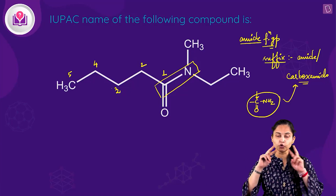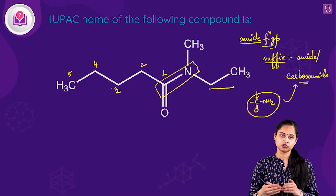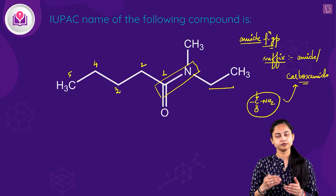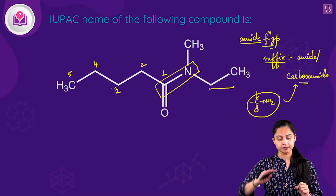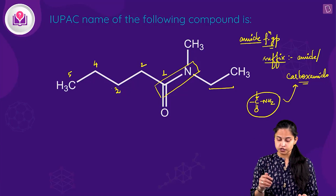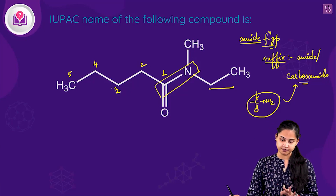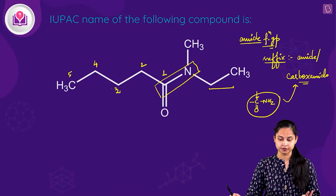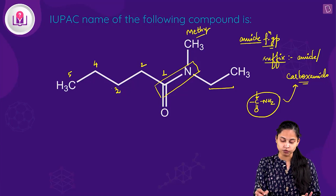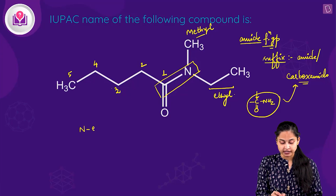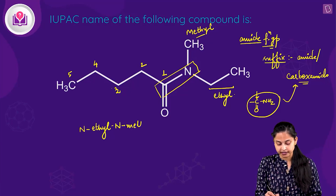Two alkyl substituents — methyl and ethyl — are attached to the nitrogen atom. We name substituents at nitrogen first, in alphabetical order. Since 'E' comes before 'M' alphabetically, ethyl is named first. The 5-carbon parent chain gives 'pentanamide'. So the name is N-ethyl-N-methyl-pentanamide.